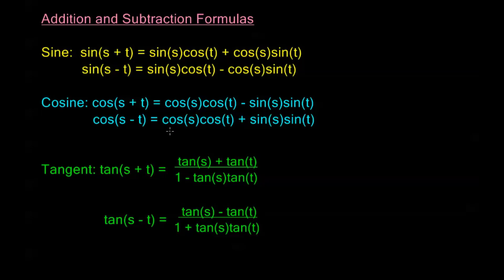Now let's look at where these come from. I'm going to derive one of the cosine formulas, and the rest can be derived in a similar way. All of the sine and cosine formulas can be derived by the method I'm about to show. For the tangent formulas, we can derive those by taking the quotient of sine(s+t) over cosine(s+t), or sine(s−t) over cosine(s−t), and then simplifying.